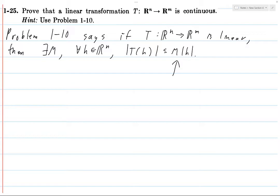And furthermore, being continuous is equivalent to being continuous at the point zero. So if you're continuous just at the origin, then you're continuous everywhere.